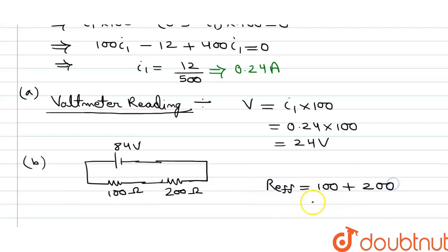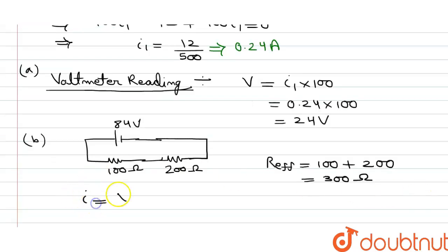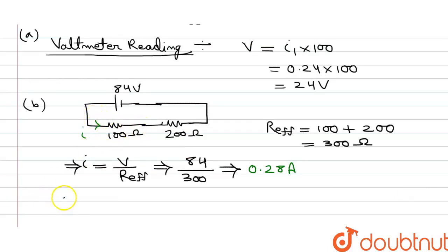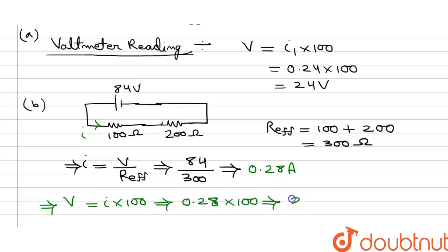In this case, the net effective resistance is 100 plus 200 equals 300 ohm. The current is V divided by R_effective equals 84 divided by 300, which gives 0.28 ampere. The potential drop across 100 ohm is i × 100 equals 0.28 × 100 equals 28 volts. So the answer to Part B is 28 volts.